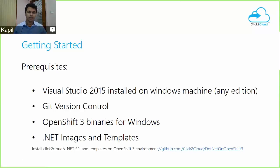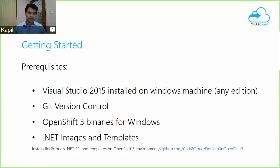Let's get started with the prerequisites. To run our application you require Visual Studio 2015 installed on your Windows machine. The current version is compatible with any edition of Visual Studio 2015. You also need the Git version controller, the OpenShift 3 binaries for Windows (OC binaries), and the .NET images and templates if you wish to enable .NET capabilities on the OpenShift 3 cloud.